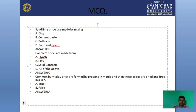Next question: concrete bricks are made from — options are fly ash, clay, solid concrete, or all of the above. Since it is a concrete brick, it is made from concrete, so the correct answer is solid concrete.